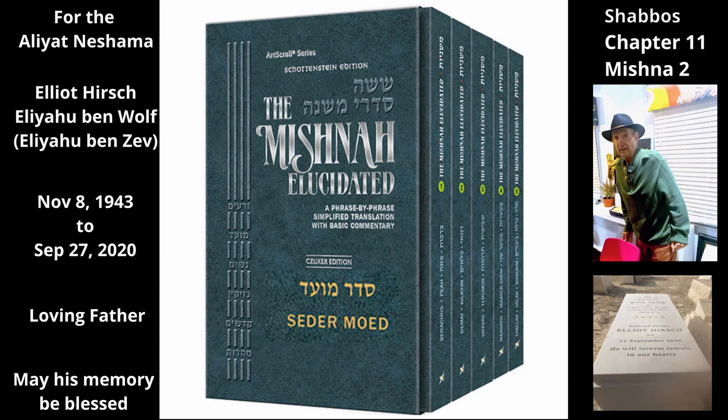If there are two balconies, each with the dimensions of a private domain, that face each other on opposite sides of the public domain, whether a person hands the item or throws it from one balcony to the other, he is exempt.